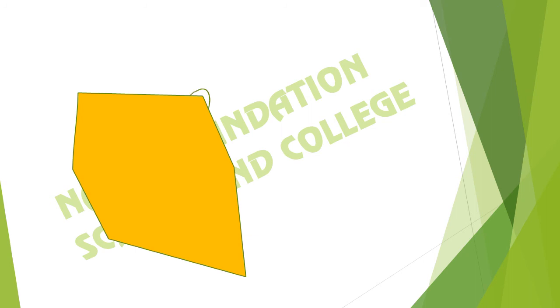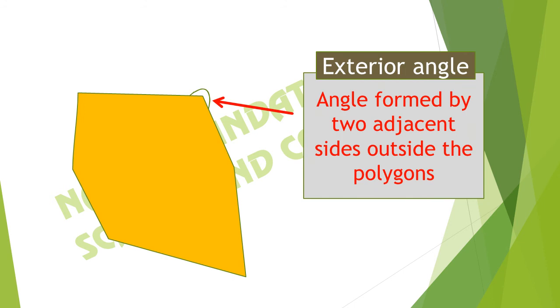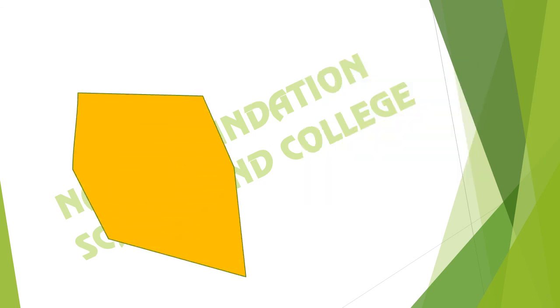Exterior angle: the exterior angle is formed by two adjacent sides outside the polygon. Here is an angle formed by two adjacent sides that is outside the polygon — this is the exterior angle.